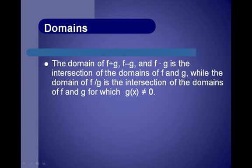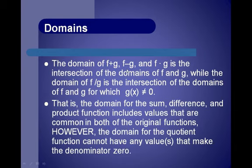The domain of the first three functions — sum, difference, and product — is the intersection of the domains of f and g, meaning values common to both original functions. The domain of the quotient f over g is also the intersection of the domains of f and g, but cannot include any values that make the denominator zero.